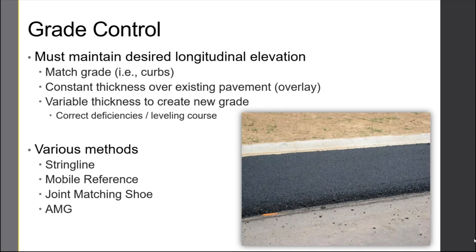Grade control — we have to maintain a certain longitudinal elevation. If it's a brand new roadway, they've done all kinds of planning and geometric design for curvature and sight distance, so we don't want to mess that up. Maybe we're just resurfacing, adding a couple of inches to the existing, or maybe it's mill and fill where we've dropped that down and will fill it back in. There are several methods to control grade: string line, mobile reference, joint matching shoes, and automated machine guidance. The string line is the most accurate traditional method — a survey crew sets each post to give a visual guide. The disadvantage is it's easily damaged by haul trucks or other traffic, and someone has to come back and reset elevations.